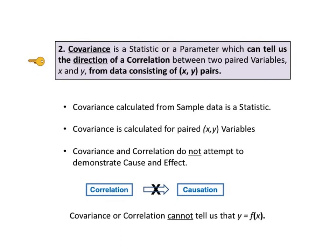The second key says that covariance is a statistic or a parameter which can tell us the direction of a correlation between two paired variables, x and y, from the data consisting of x, y pairs. In correlation, we usually deal with a sample of x, y pairs.